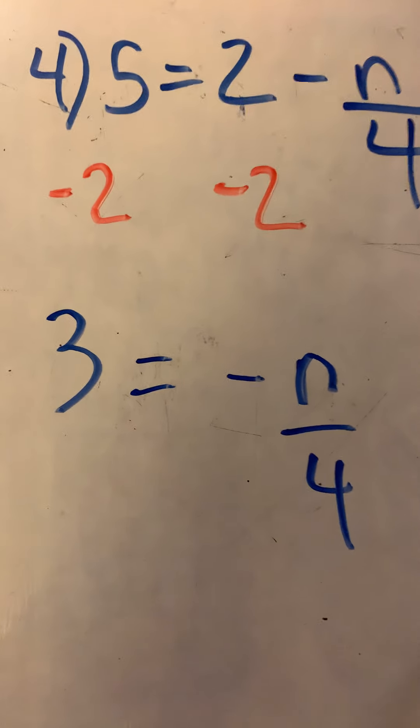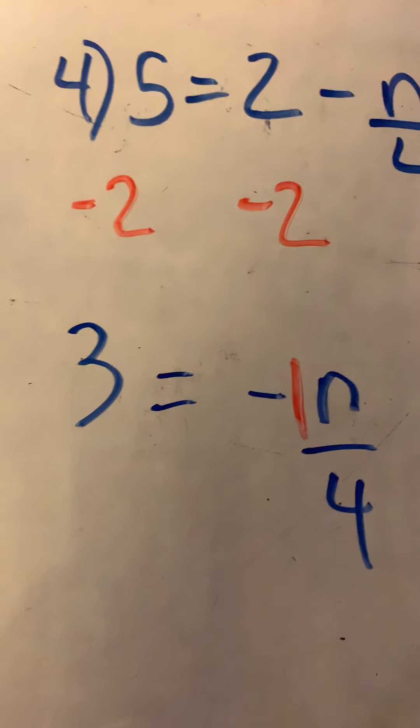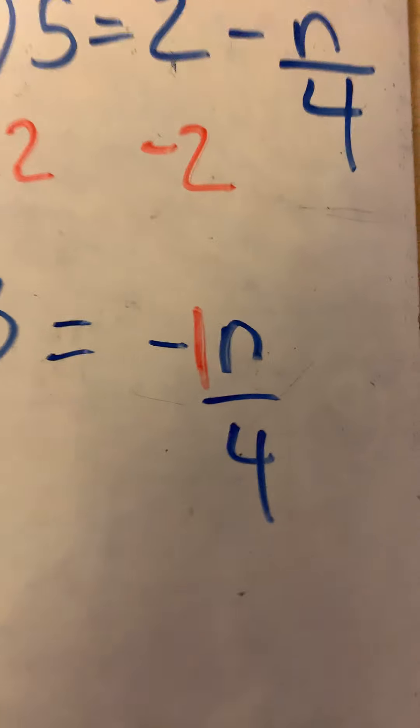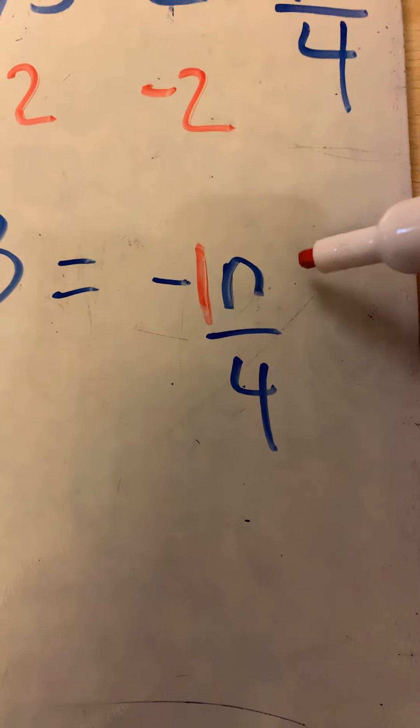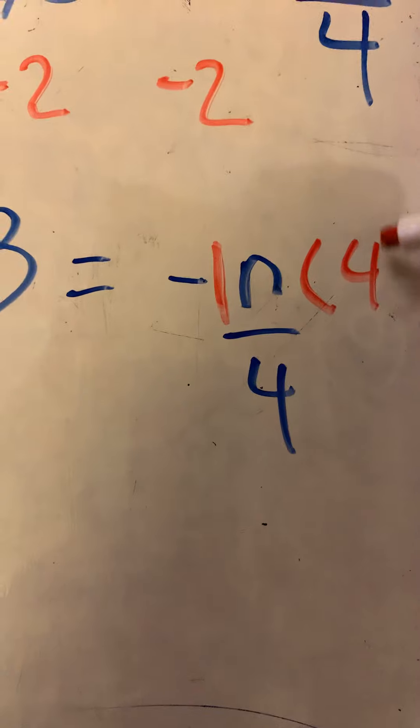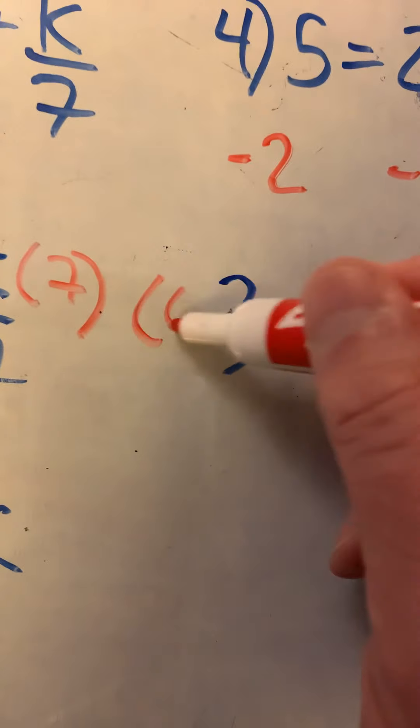Now remember, even though we don't see it in front of that n, there's a one. So I can think of that as -1n. Now I have divide by four. The opposite of divide by four is times by four. Do it on that side, got to do it to the other side.